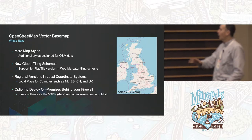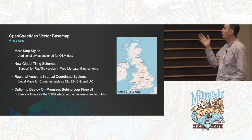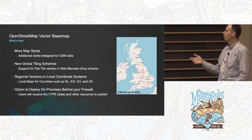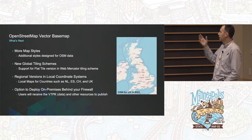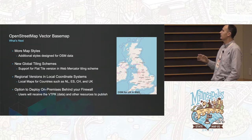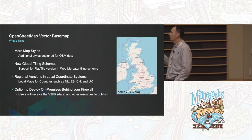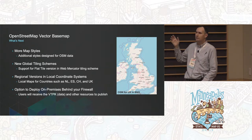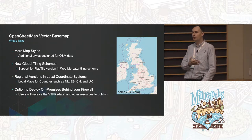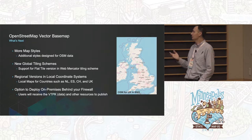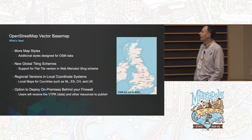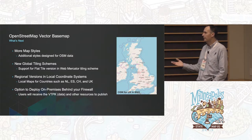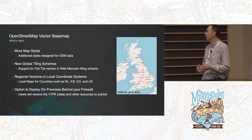That's where we are right now with the OpenStreetMap vector base map. Coming up: more styles — our Esri cartographers are building more styles like the blueprint. We're also making available a global tiling scheme, and a flat tiling scheme for development environments that require it. We've been working with distributors around the world — for example, in the UK where they'd like to use OSM in their own local coordinate systems. In the UK they use British National Grid, not Web Mercator or GCS. So here's an example of OSM in British National Grid. We can also deploy on-premises behind firewalls for organizations that want to use OSM in secure environments.